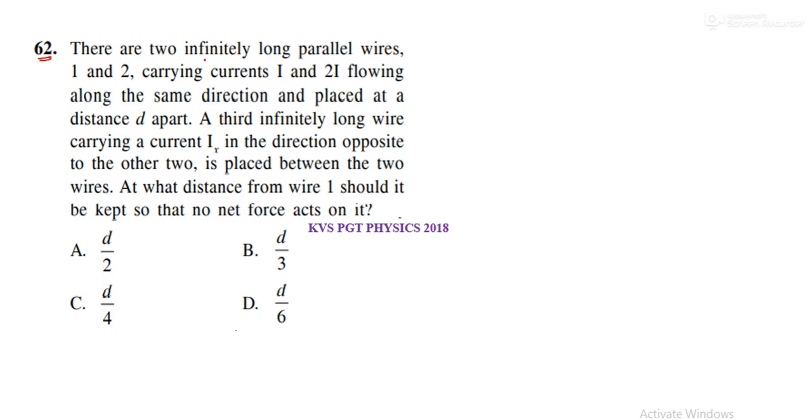Question number 62. There are two infinitely long parallel wires carrying current i and 2i flowing in the same direction and placed at a distance d apart. A third infinitely long wire carrying a current ix in the direction opposite to the other two is placed between the two wires. At what distance from wire 1 should it be kept so that no force acts on it?